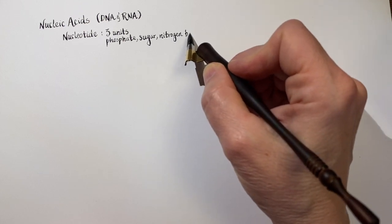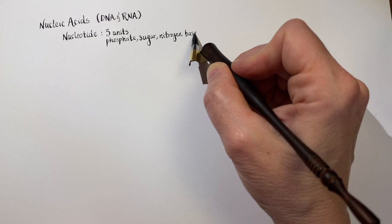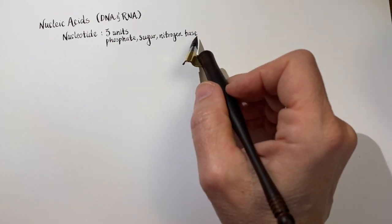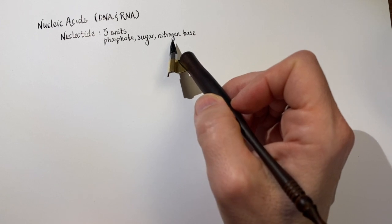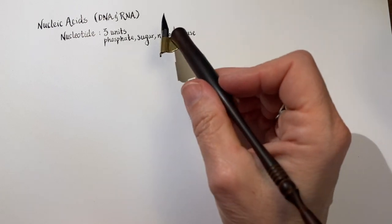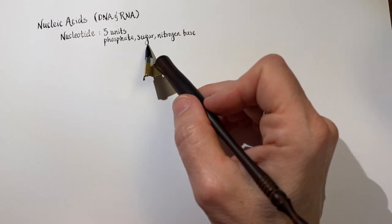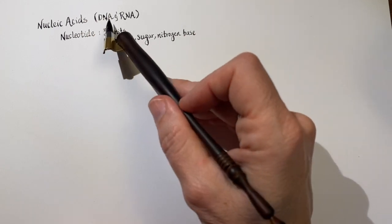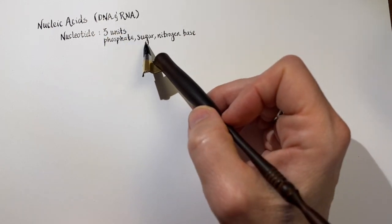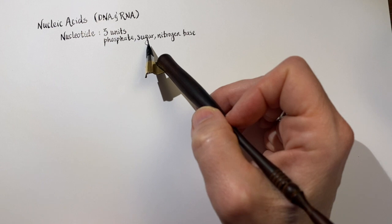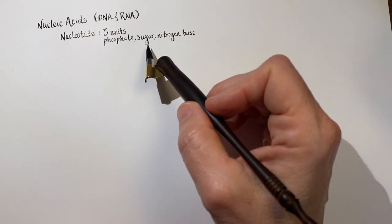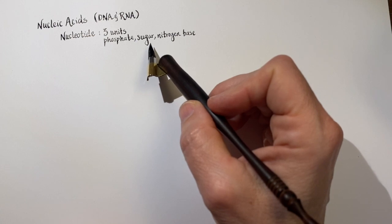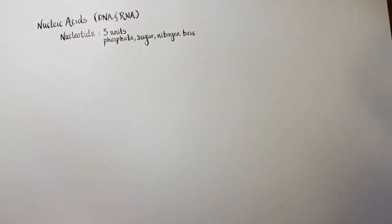I'm being very general when I say these three things on purpose, because the sugar varies a little bit whether it's DNA or RNA — whether it's deoxyribose or if it's just regular ribose.